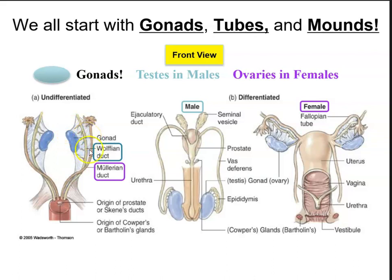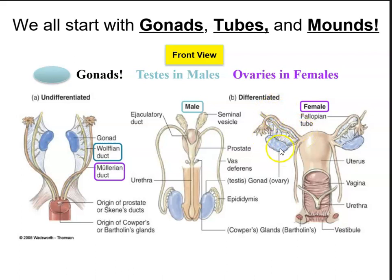We have ducts — the Wolffian duct and the Müllerian duct. If the fetus is fated to become male, the Wolffian duct will give rise to the male reproductive organs. If the fetus is determined to become female, the Müllerian duct will give rise to female reproductive organs such as the fallopian tubes and the uterus. We can see the male gonads are the testes, and the ducts include the vas deferens, seminal vesicle, prostate gland, and ejaculatory ducts. In females, the gonads are the ovaries and ducts include the fallopian tubes.